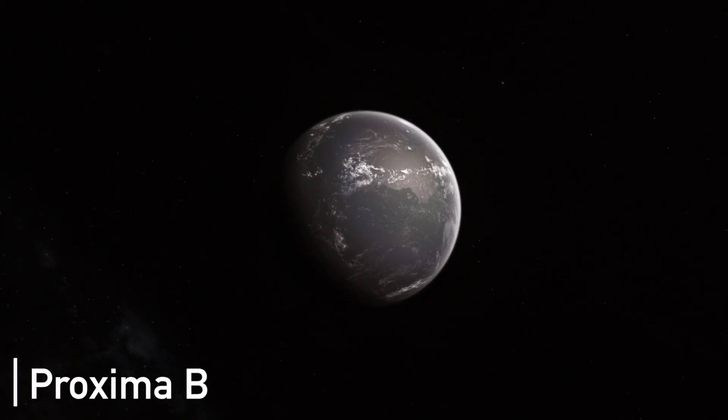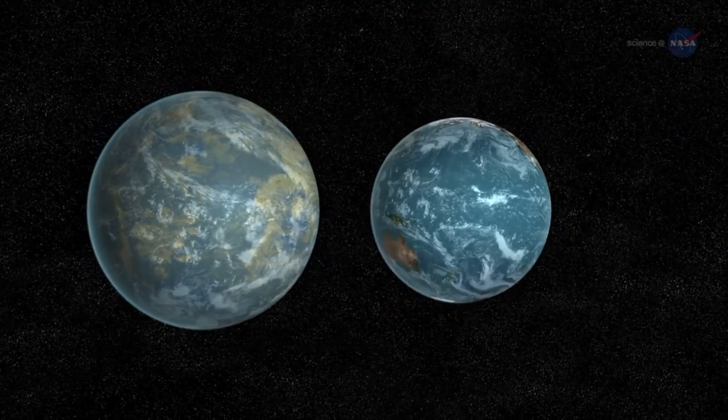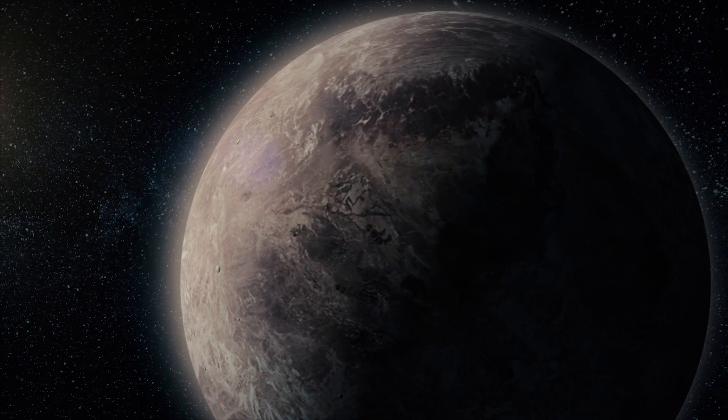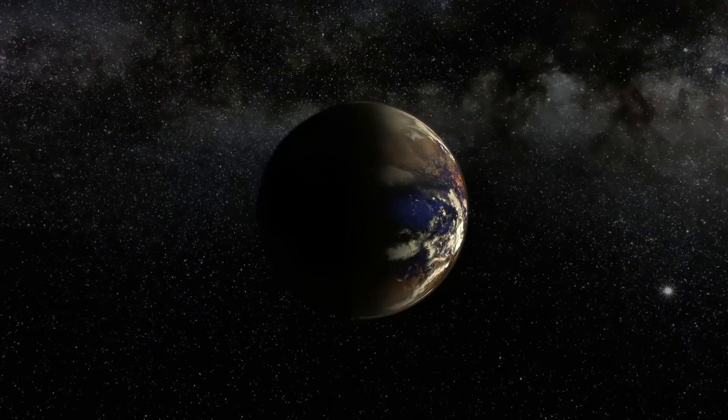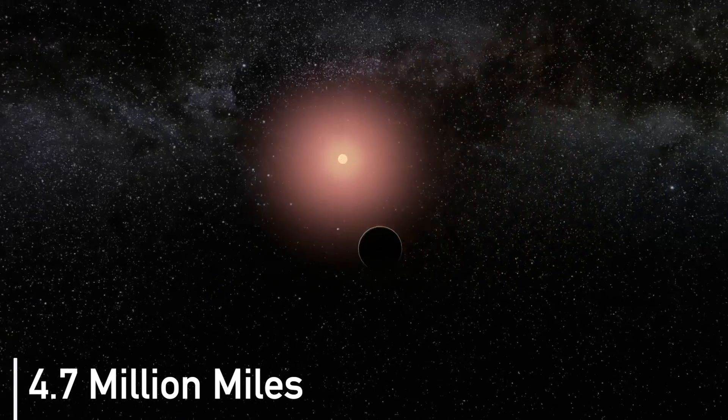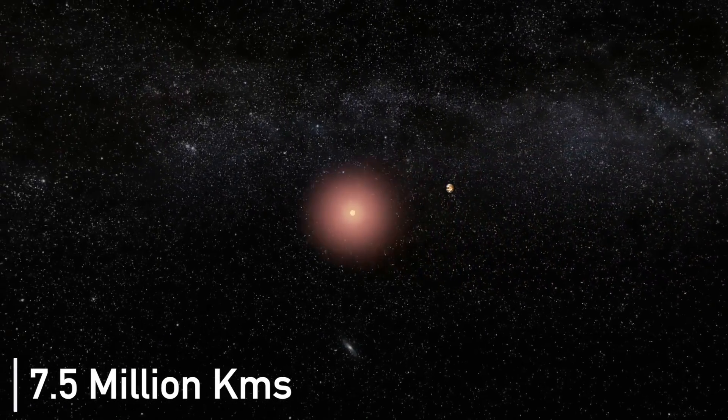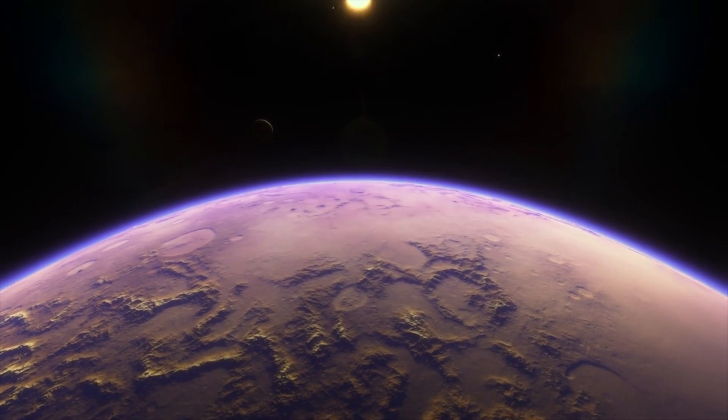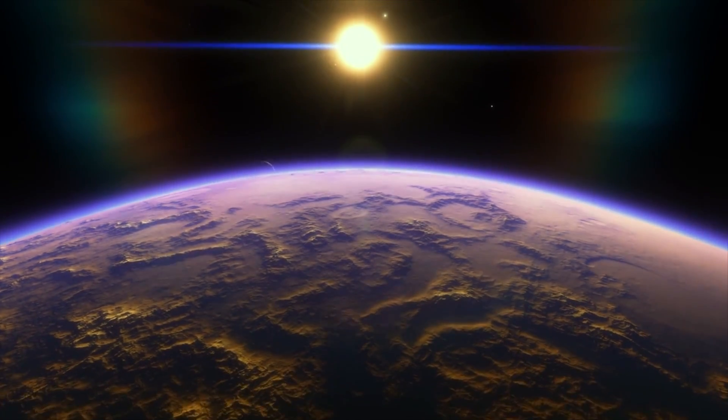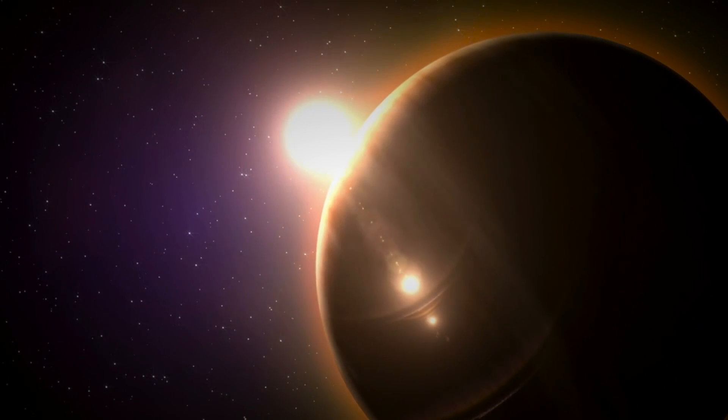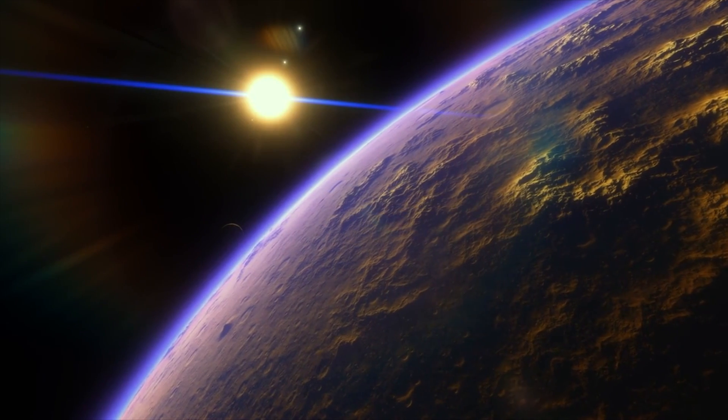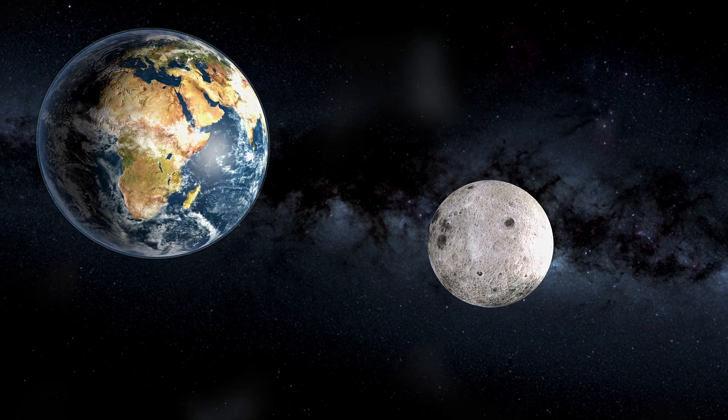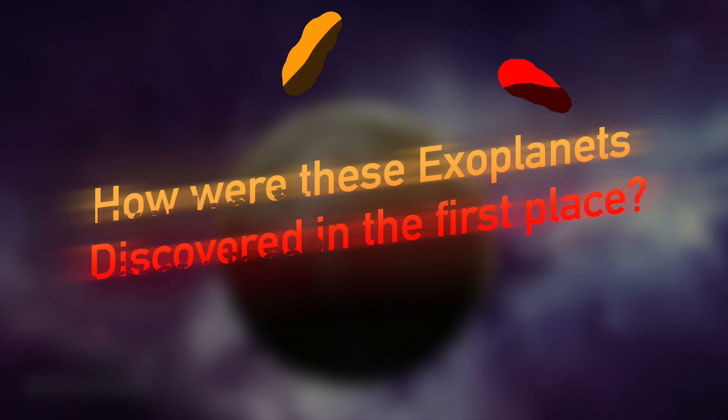The newly discovered world known as Proxima B is around 1.3 times as big as the Earth, which suggests that the exoplanet is a rocky world. The planet is only 4.7 million miles or 7.5 million kilometers from its host star and is also in the habitable zone. It completes one orbit every 11.2 Earth days. It seems that the exoplanet is probably tidally locked, which means that it always exposes the same side to its host star, just like the moon only shows one face to Earth.